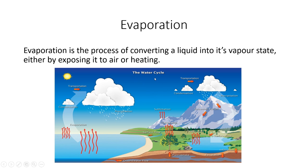This is a water cycle picture. So in this process, this is the evaporation process where the water from the seas and oceans rises up in the form of vapor and gets collected into the clouds.